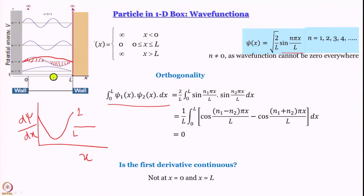We have also shown that the first derivative is not continuous at x equal to 0 and x equal to L. That is really not such a stringent condition on a wave function. The next step is to understand what the energies are, and since only certain wave functions are allowed, only certain energies will be allowed as well.